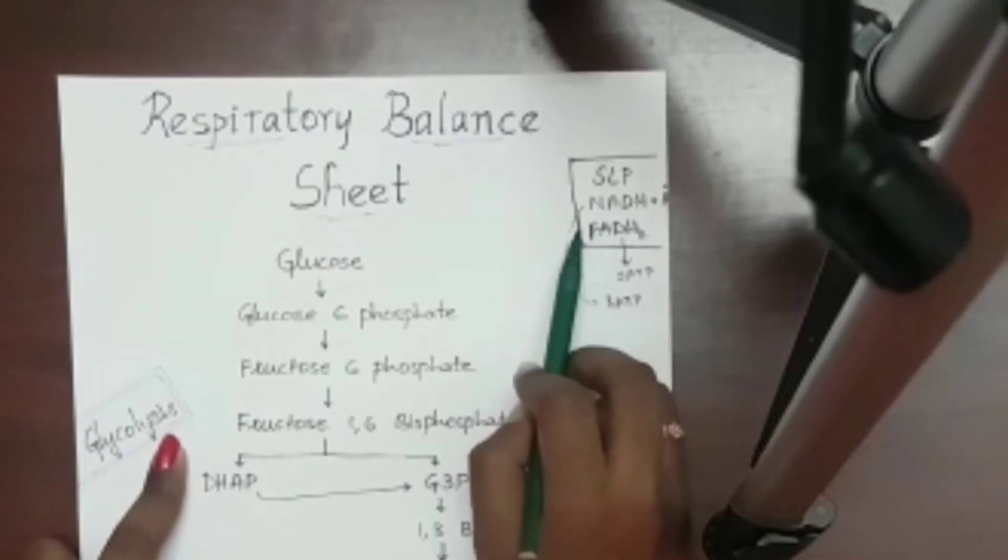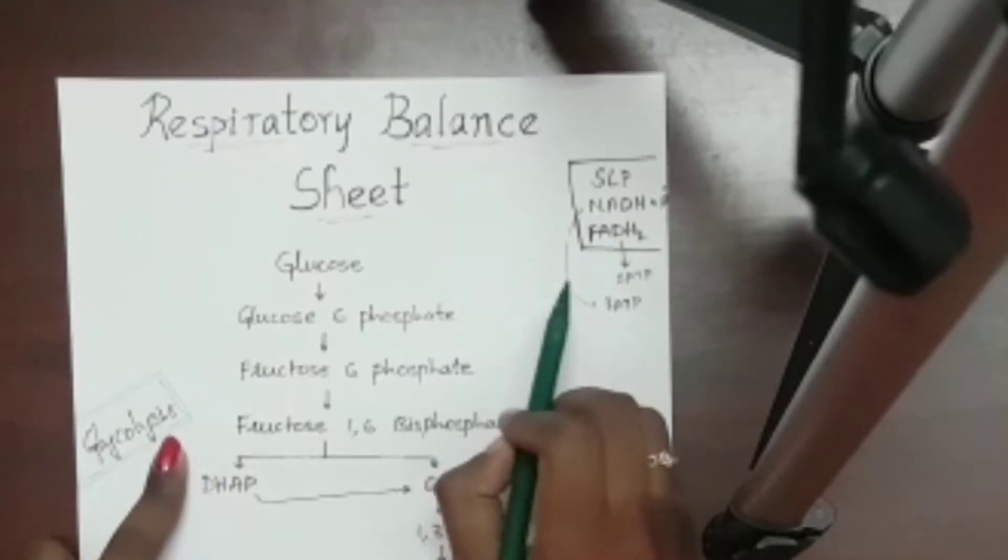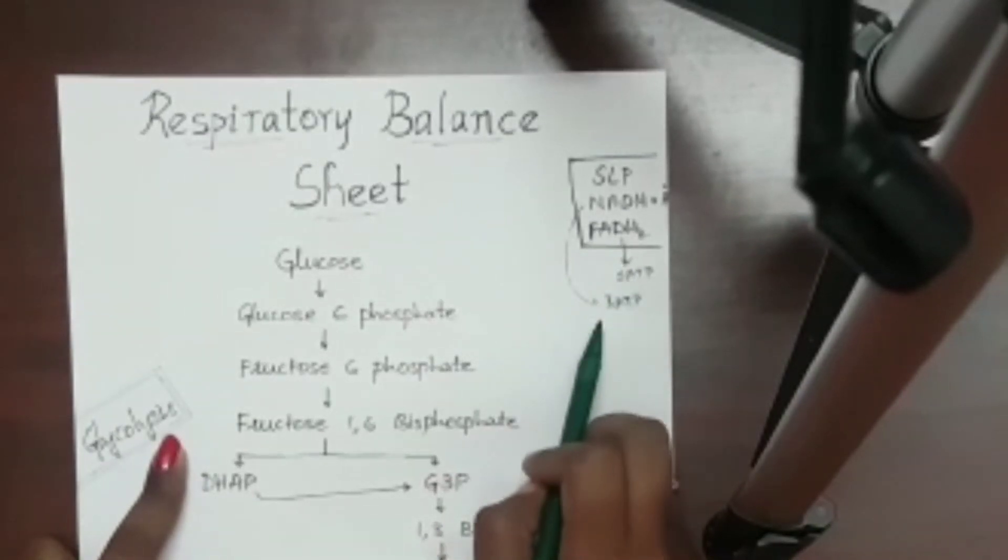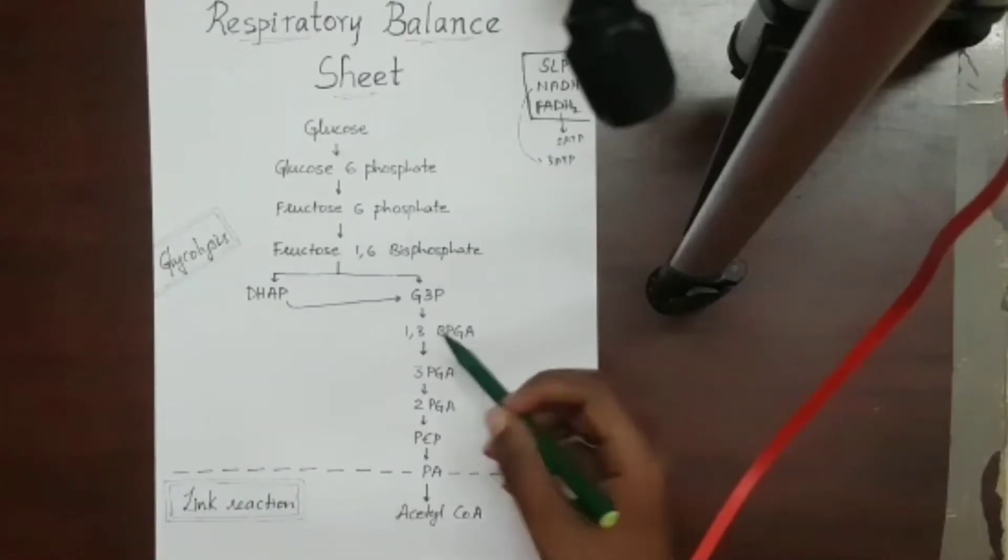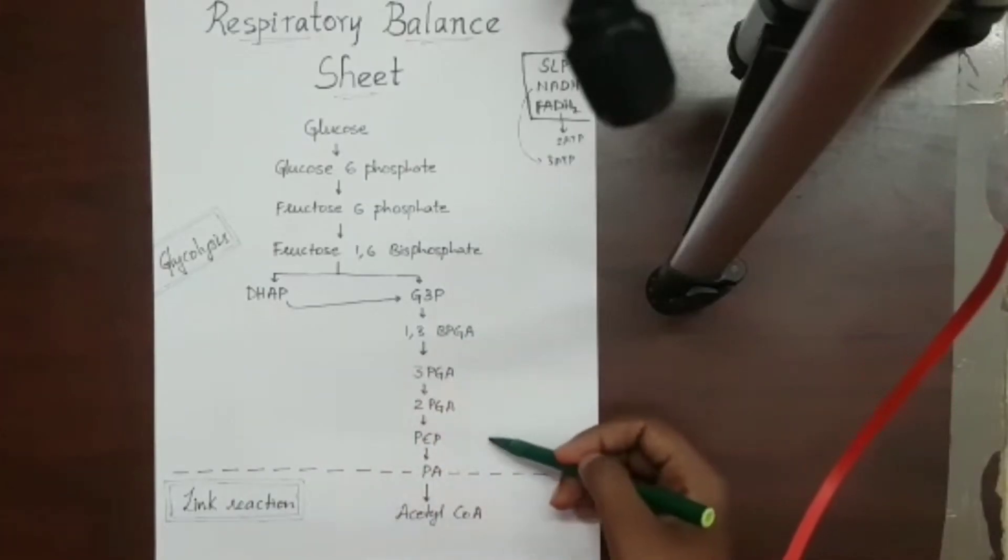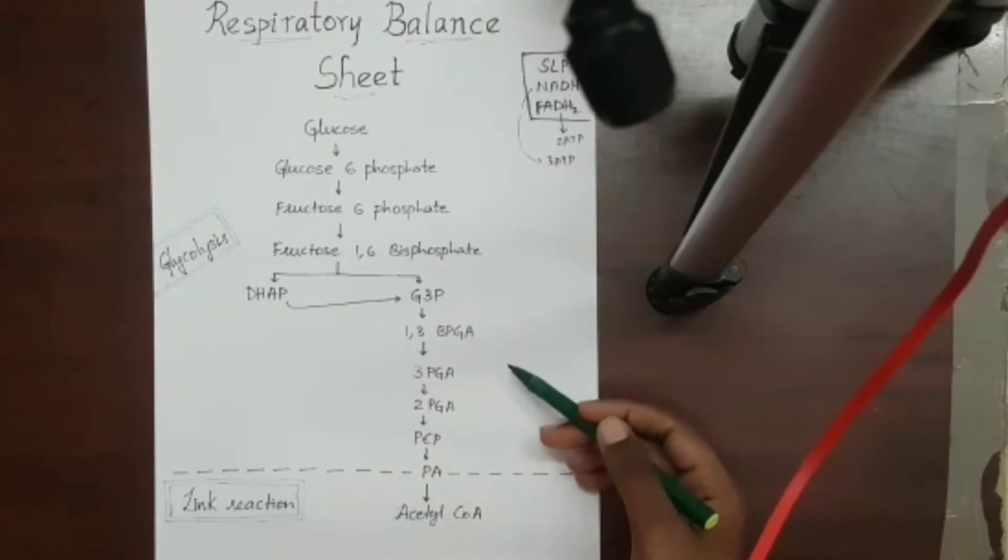These NADH++ and FADH2 pass through the electron transport system and form 3 ATP and 2 ATP respectively. I have written some short forms here. Let us elaborate them first.